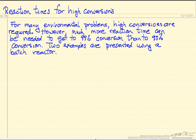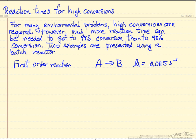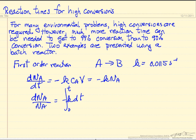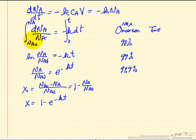We'll first look at a first-order reaction: A goes to B, with a rate constant of 0.0115 — chosen to make the numbers come out even. Doing a mass balance on a batch reactor for component A, the change in number of moles with time equals minus the rate constant times the concentration times the reactor volume. Separating variables and integrating from 0 to time t gives us N_A over N_A0 equals e to the minus kt.